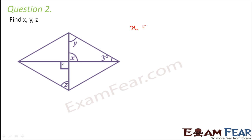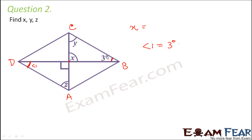In a parallelogram, the diagonals bisect each other — they intersect such that each part is equal to the other part. Let us name the figure a, b, c, d. We see this angle is equal to 30 degrees; let's call this angle 1. So angle 1 equals 30 degrees.